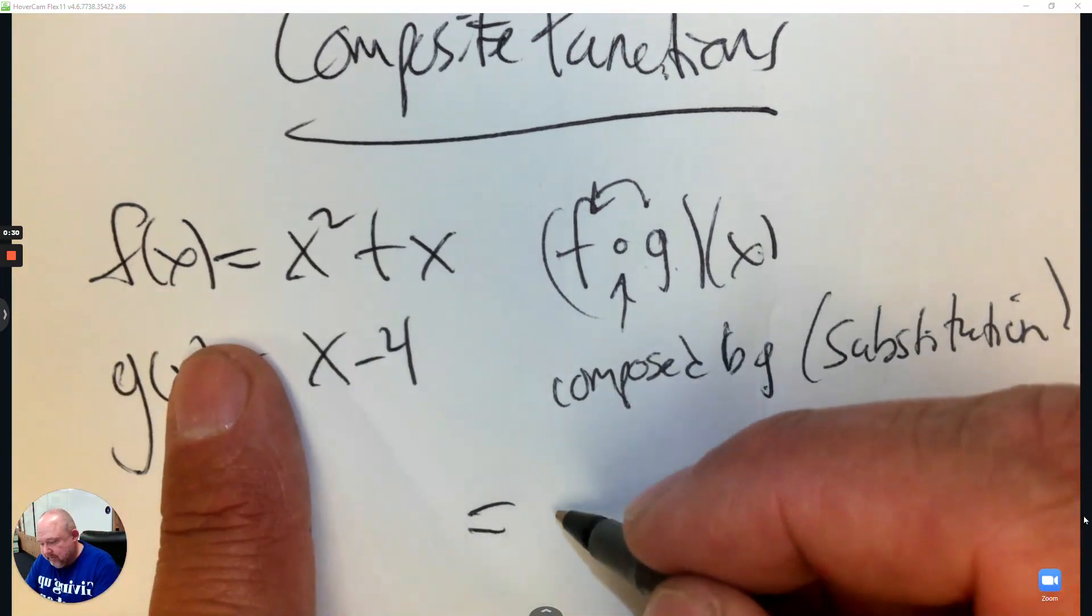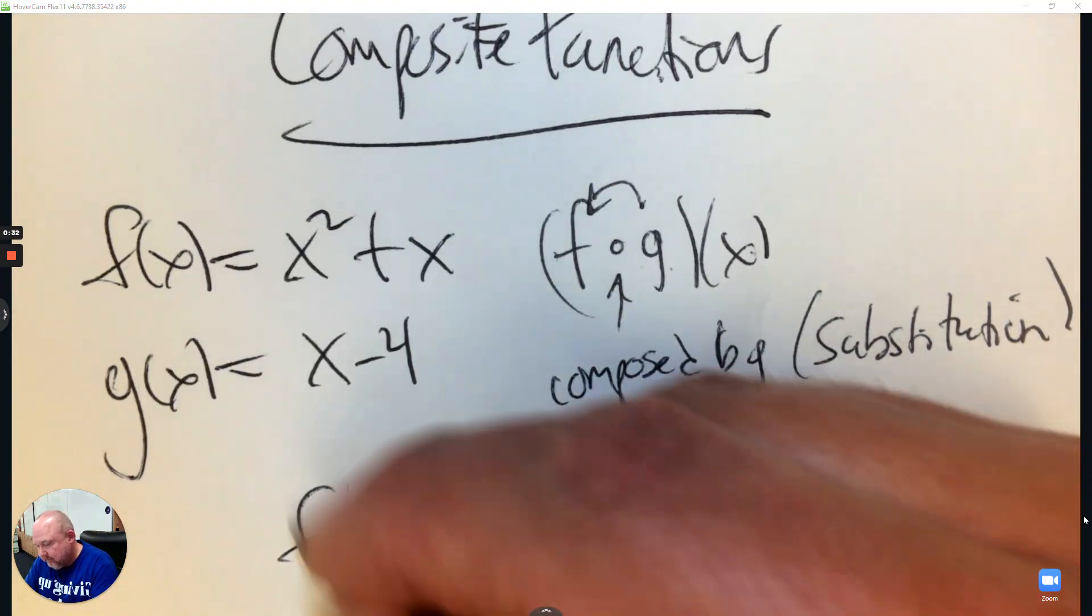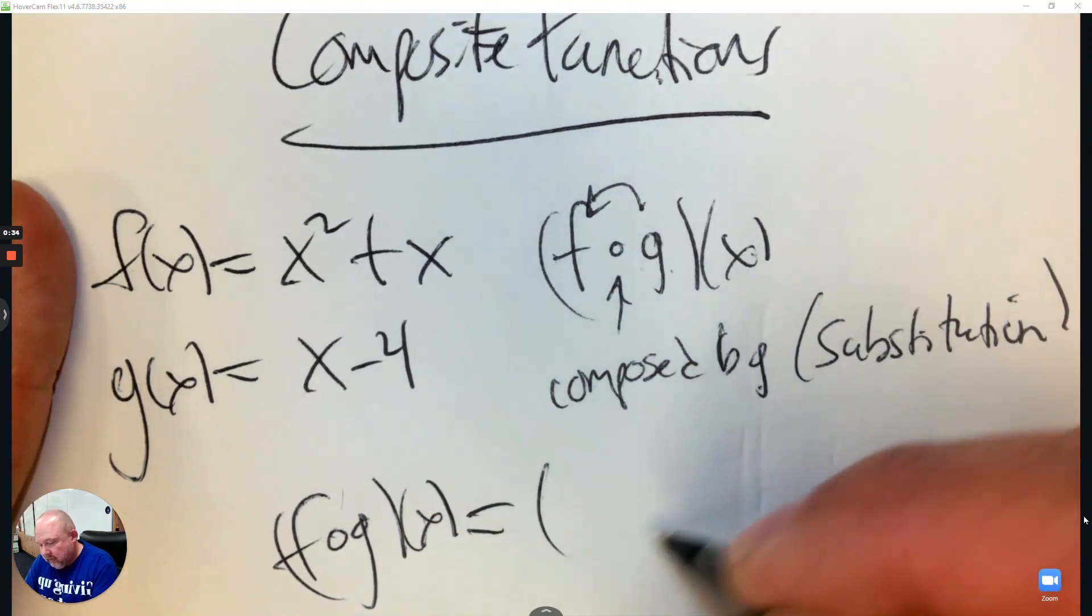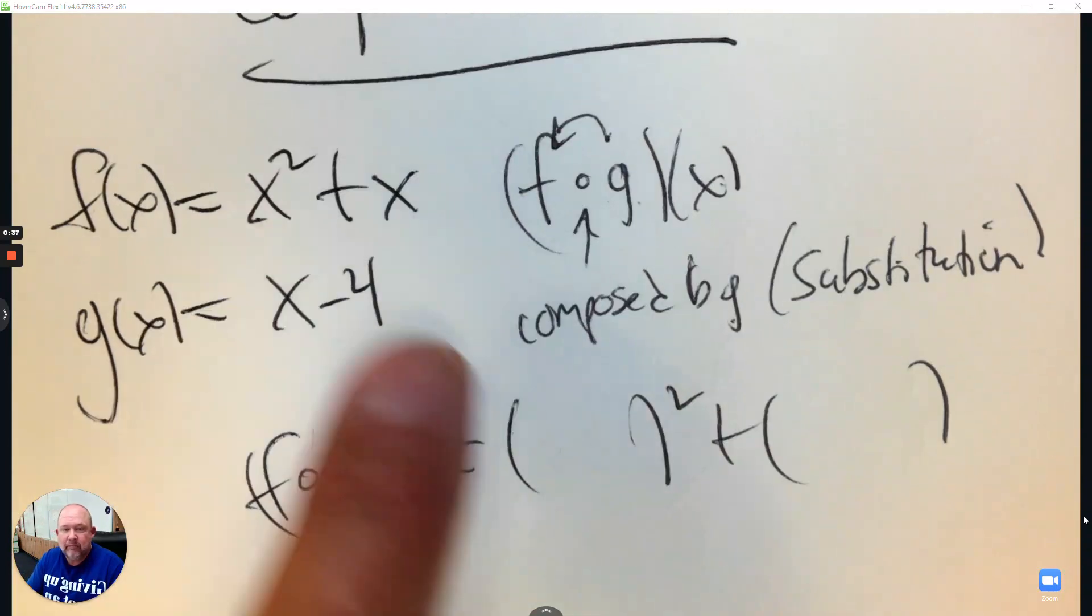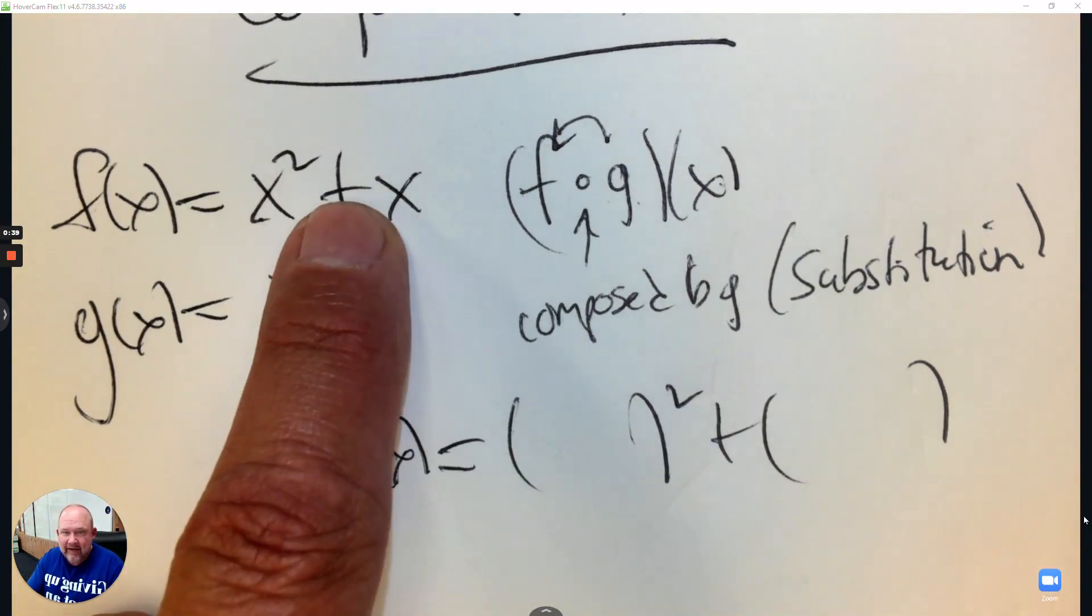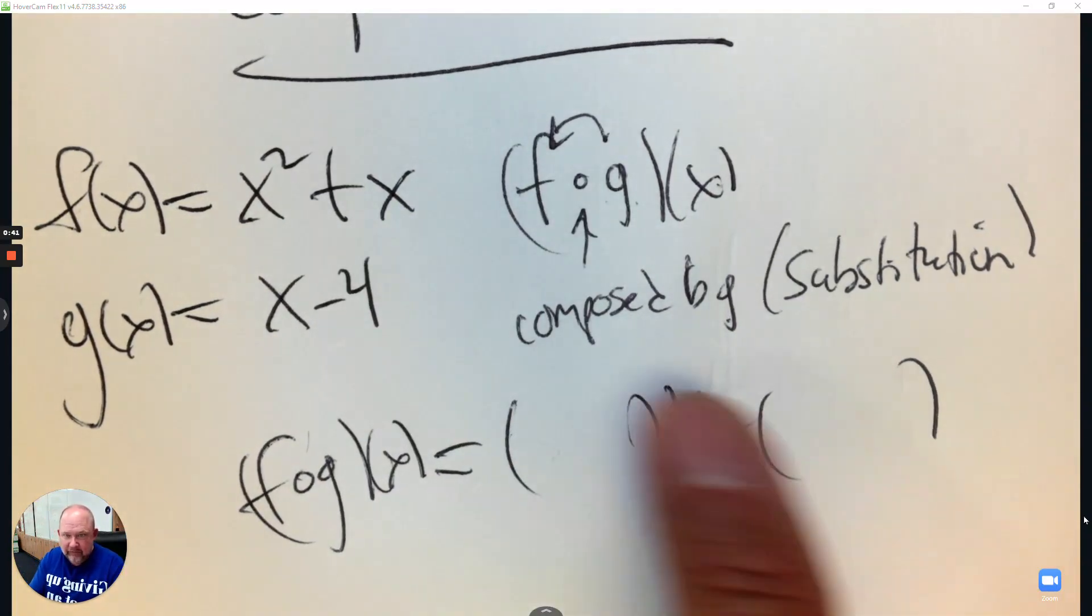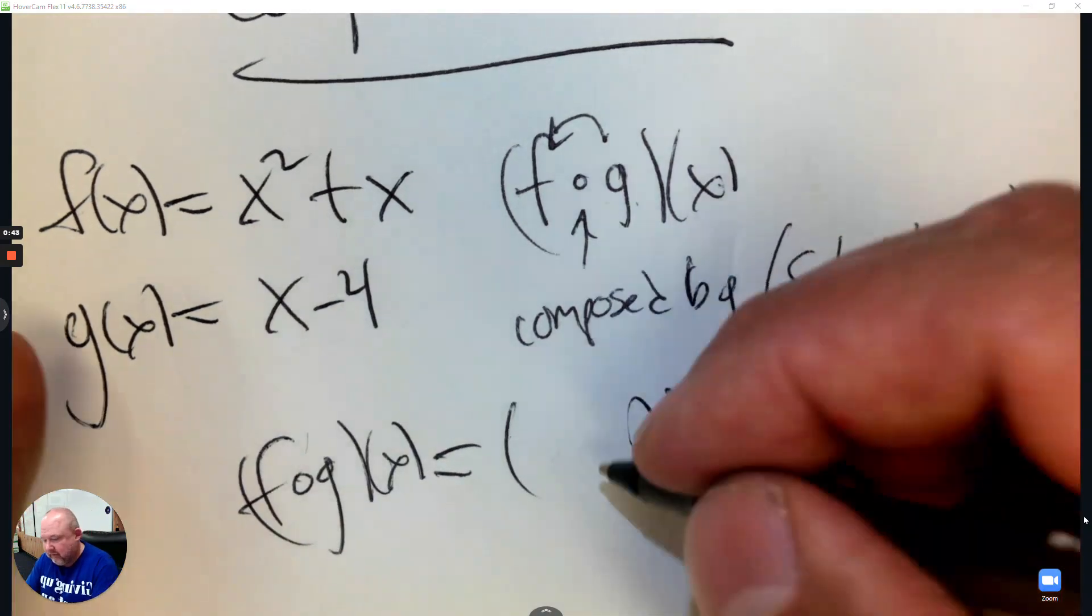So for f you have x squared. So instead of x, x squared, put in parentheses squared. And you have x again, again put in parentheses. And then inside the parentheses put in x minus 4.